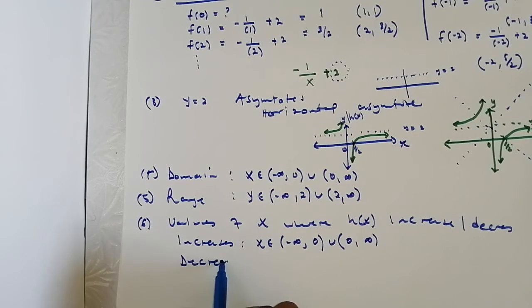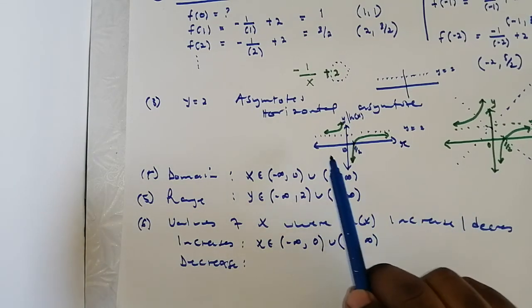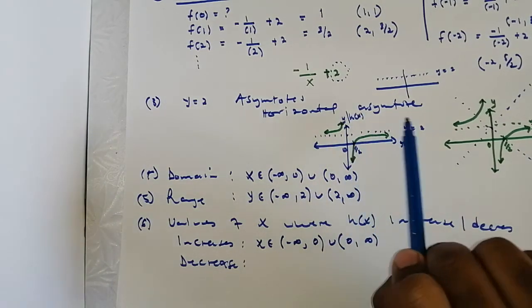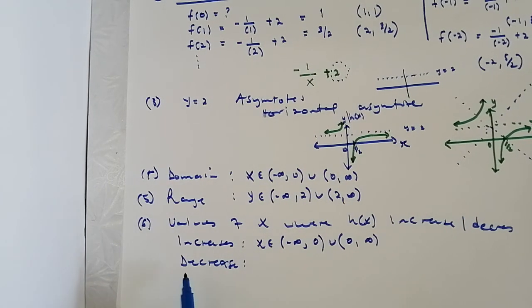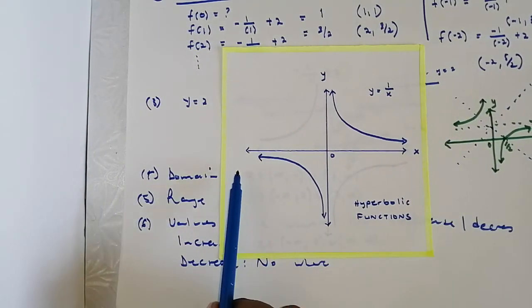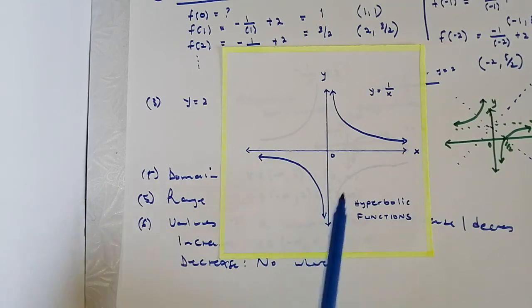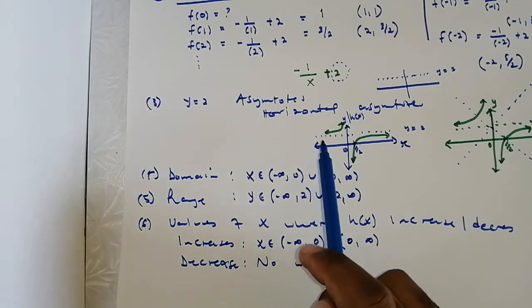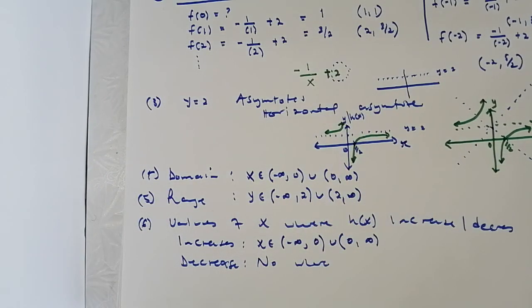As for where the function is decreasing — there is nowhere that this specific function decreases. It is increasing here and increasing here. Compare this to the basic 1/x graph which would be decreasing, but our function here is increasing throughout. So it decreases nowhere. This is how you sketch a hyperbolic graph with a vertical shift. Stay tuned, enjoy the rest of your day, and feel free to ask questions in the comments or via email.